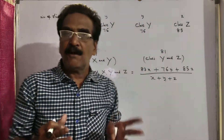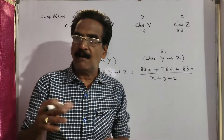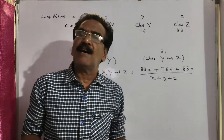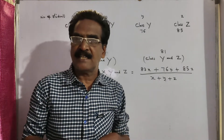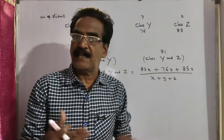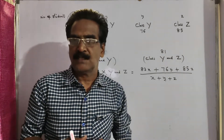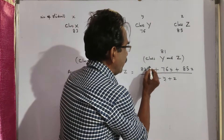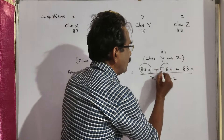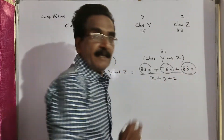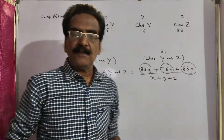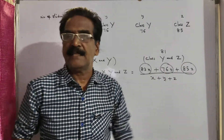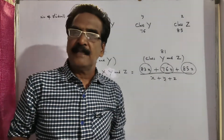And thereafter, you have to find the average score of all three classes X, Y and Z. The average score of all three classes X, Y and Z is equal to the sum of the scores of all three classes divided by the total number of students, then you get the average score of all three classes.